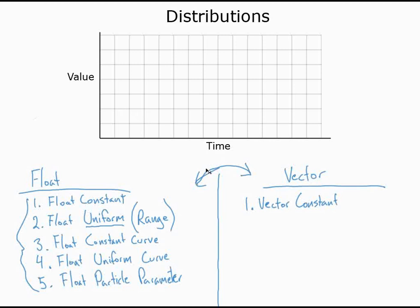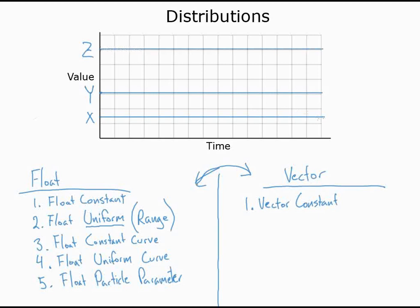A vector constant on a graph gives you three separate straight horizontal lines — one for X, one for Y, and one for Z — each at a constant value. These lines don't have to be in any particular order; they could even overlap or all be at the same value. For instance, if X, Y, and Z are all a value of one, those three lines would sit right on top of each other. It's simply a constant vector that does not change over time.